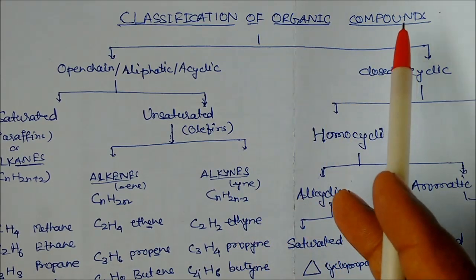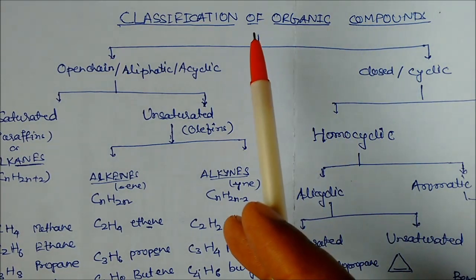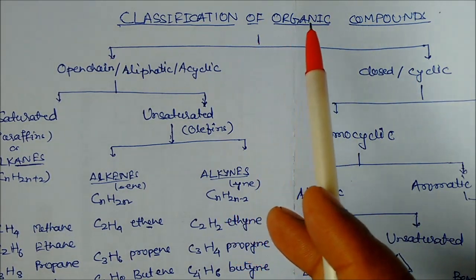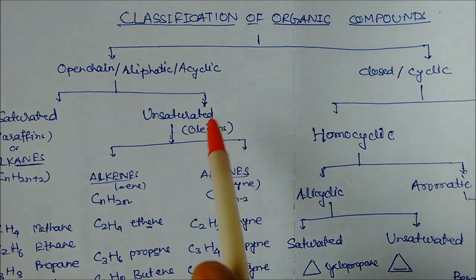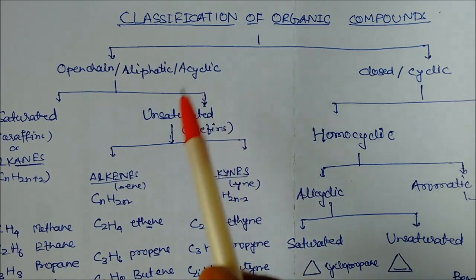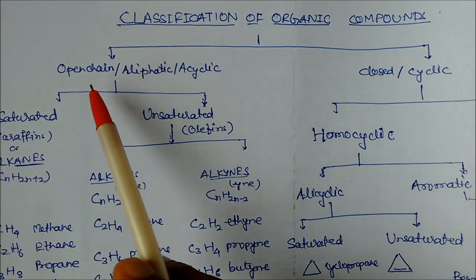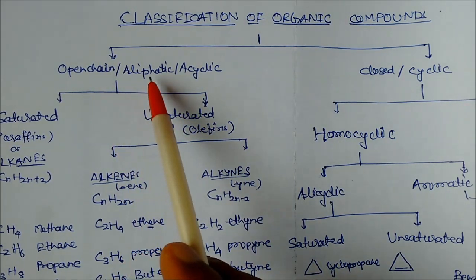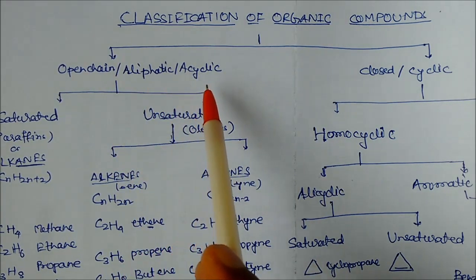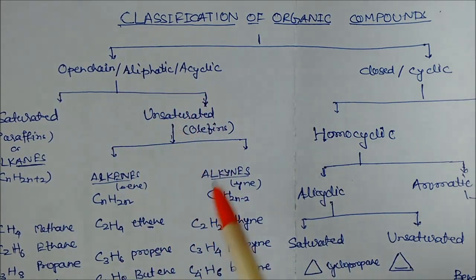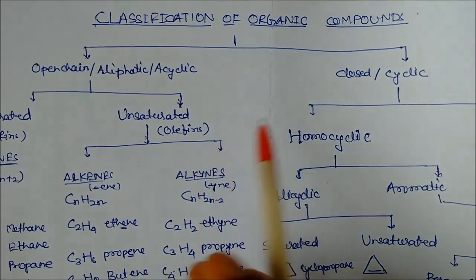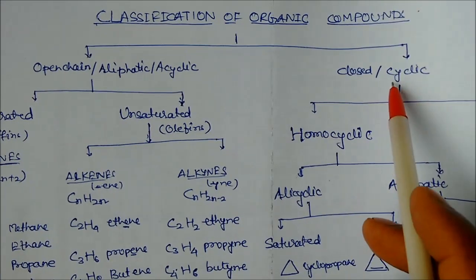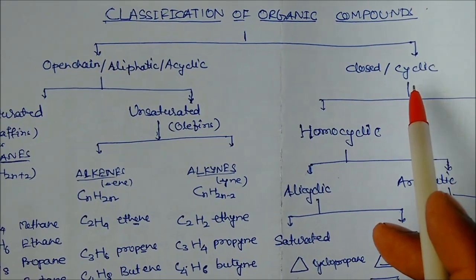Classification of organic compounds. Since organic compounds exist in the largest number, they are classified into two types: one is open chain, also called aliphatic or acyclic carbon, and the second is called closed or cyclic carbon.